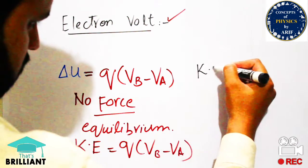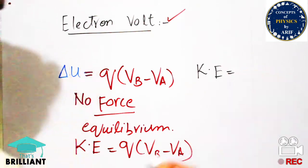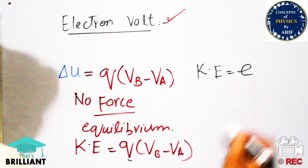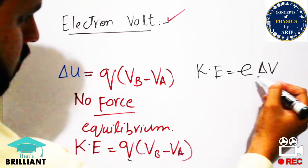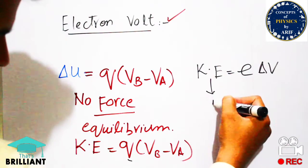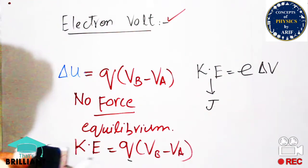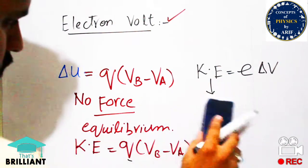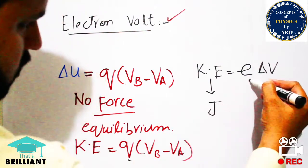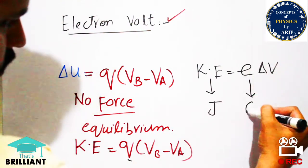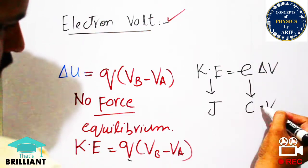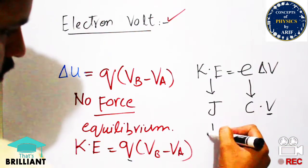When these two charges are present, they automatically try to move towards or away from each other due to their polarity. So kinetic energy will be equal to q, which we convert into e for electron, into the change in volt or change in potential — this is known as electron volt.